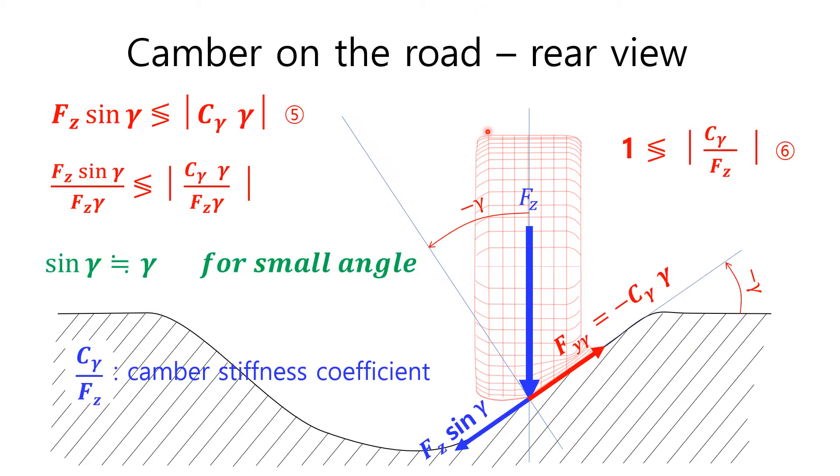In the side wall of rut, there are two types of forces laterally acting on the tire. The component of tire load Fz sin gamma is directed downhill, and the camber thrust Fy gamma is directed uphill. Two forces can be expressed in equation 5.